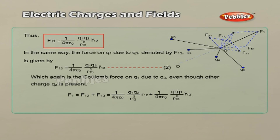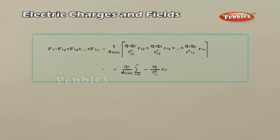The total force F1 on Q1 due to the two charges Q2 and Q3 is given by equation 2. This calculation can be generalized to a system of more than three charges. The principle of superposition states that in a system of charges Q1, Q2, and so on till Qn, the force on Q1 due to Q2 is the same as given by Coulomb's law — unaffected by the presence of Q3, Q4, and so on. The total force F1 on Q1 due to all other charges is then given by the vector sum of F12, F13, and so on till F1n.